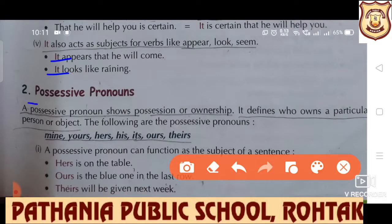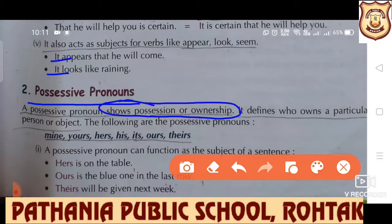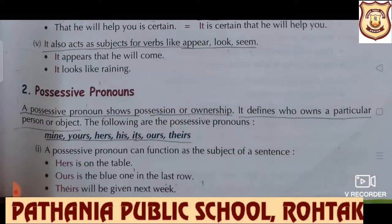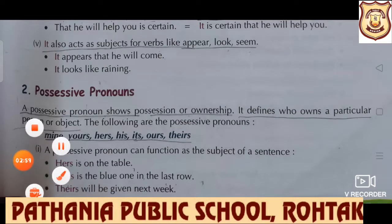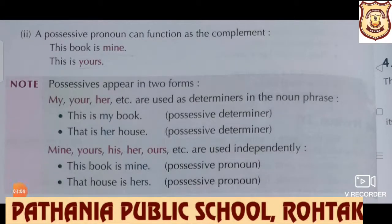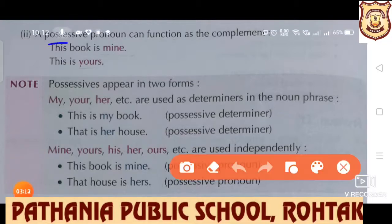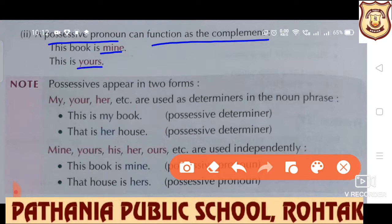I hope till here, students, there is no problem. Further, we have possessive pronoun. A possessive pronoun shows ownership. 'This book is mine. These notebooks are hers. These belongings are yours.' A possessive pronoun can function as the subject of a sentence: 'Hers is on the table. Ours is the blue one. Theirs will be given next week.' When a possessive pronoun is used as the doer of the action, it is in the subjective case. It can also be used as a complement: 'This book is mine' — here it is used as a complement in the sentence.